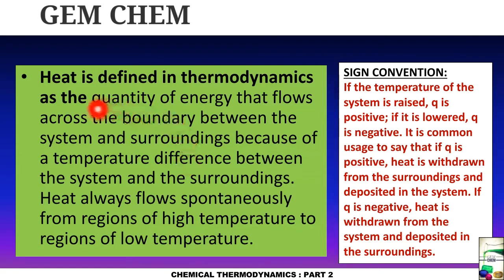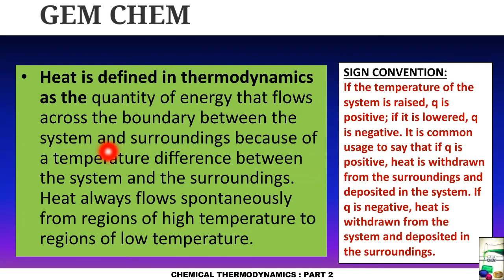What do we mean by heat? Heat is defined in thermodynamics as a quantity of energy that flows across a boundary present between the system and the surroundings. The system is the thing on which we observe the change, and the surrounding is the environment around it. This heat flow occurs because of a temperature difference between the system and the surroundings.